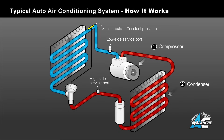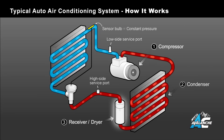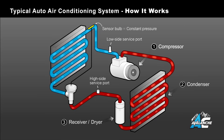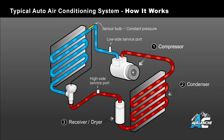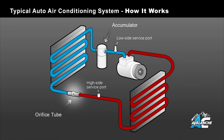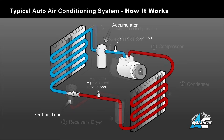The high-pressure liquid flows through the receiver dryer, which has a desiccant bag inside it to filter and absorb small amounts of moisture that may contaminate the refrigerant. On AC systems using an orifice tube, the receiver dryer is replaced with an accumulator, which is located between the evaporator and the compressor.